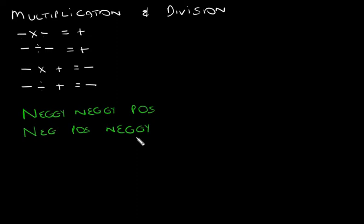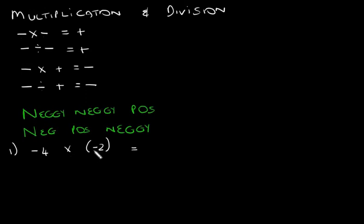It's just something to help you along the way. So what if I were to say minus 4 times minus 2? A negative times a negative is a positive, and then we say 4 times 2 is 8. What if I were to say negative 16 divided by 4? You know that the 4 has an invisible plus sign, and a negative divided by a positive is a negative, and 16 divided by 4 is 4.